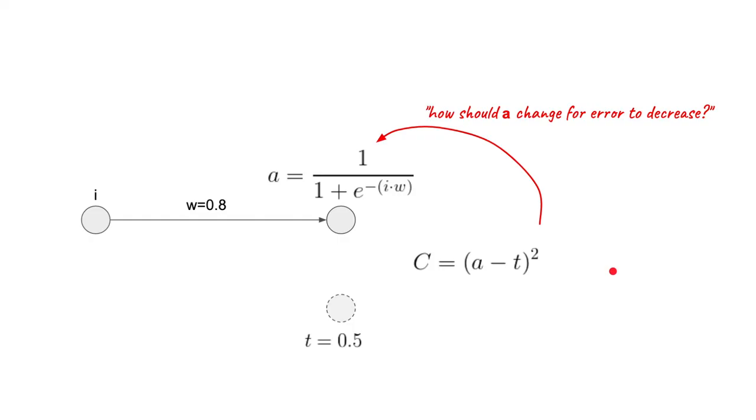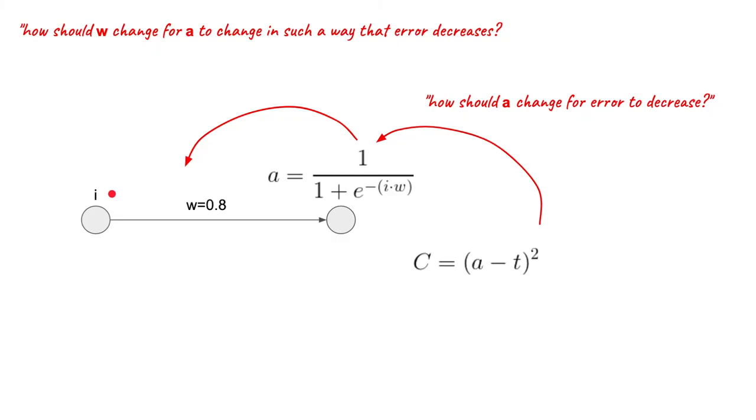And then we ask our usual question. How should a change for error to decrease? So how much should the activation change for this squared difference to decrease? And, of course, because we can't change a directly, we have to ask ourselves how should w change in order for a to change in such a way that C, our cost function, gives a smaller error. And, of course, i cannot be changed.